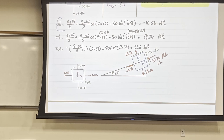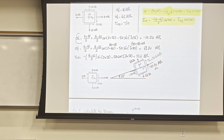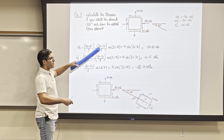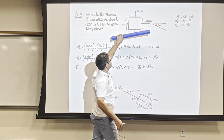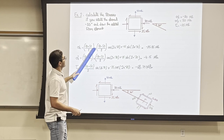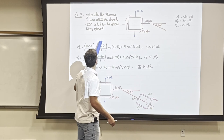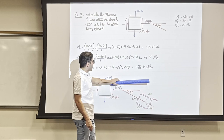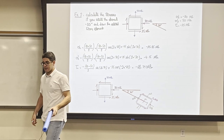Lastly, the same problem but rotating by −30° (clockwise). The same equations apply, but since sigma x was positive before, now rotating clockwise changes the sign. When drawing the element, instead of rotating it upward (counterclockwise), I rotate it downward (clockwise). And that is all I have for this lesson. Thank you.